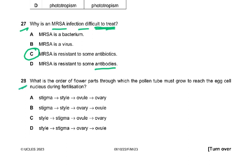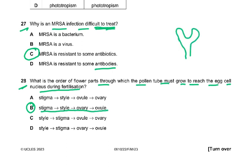Question 28: What is the order of flower parts through which the pollen tube must grow to reach the egg cell during fertilization? The answer is B — stigma, style, ovary, and ovule. This is the stigma, this is the style, then the ovary, and the ovule is inside. When pollen lands on the stigma, the pollen tube grows through the stigma and style, then reaches the ovary and the ovule.